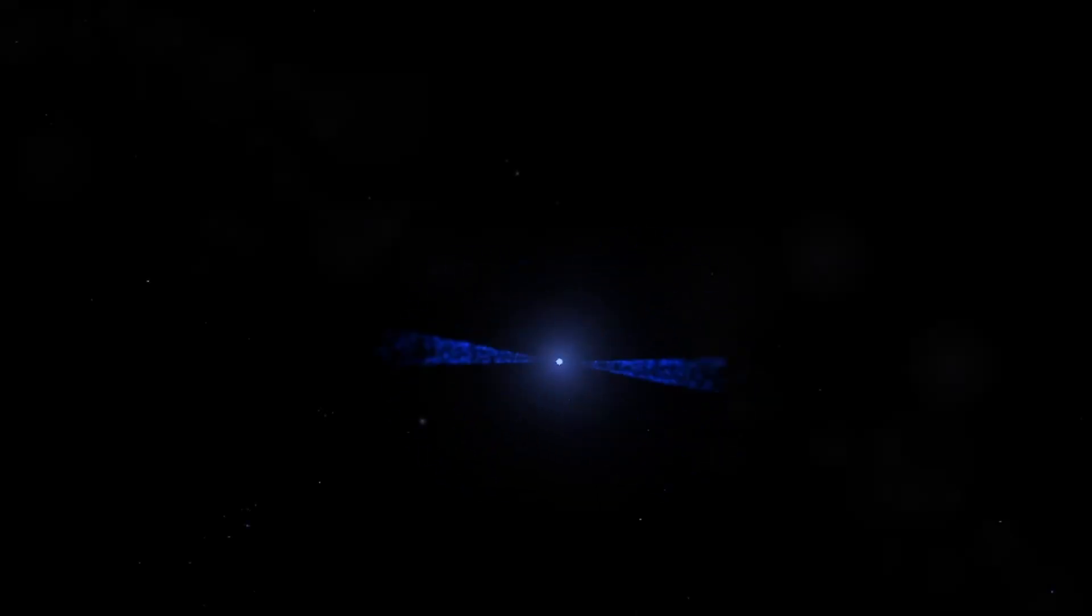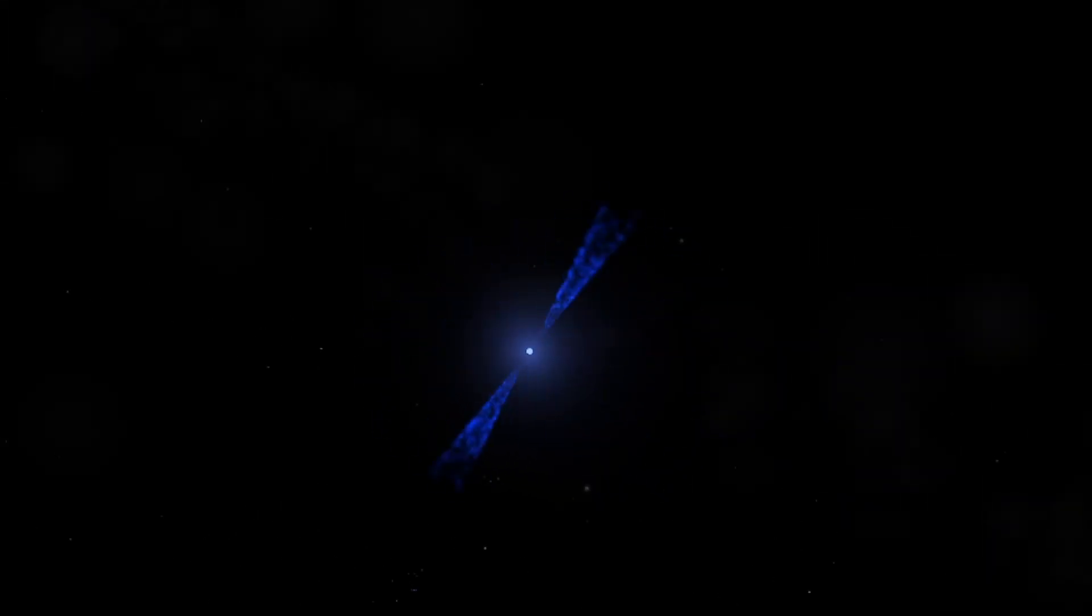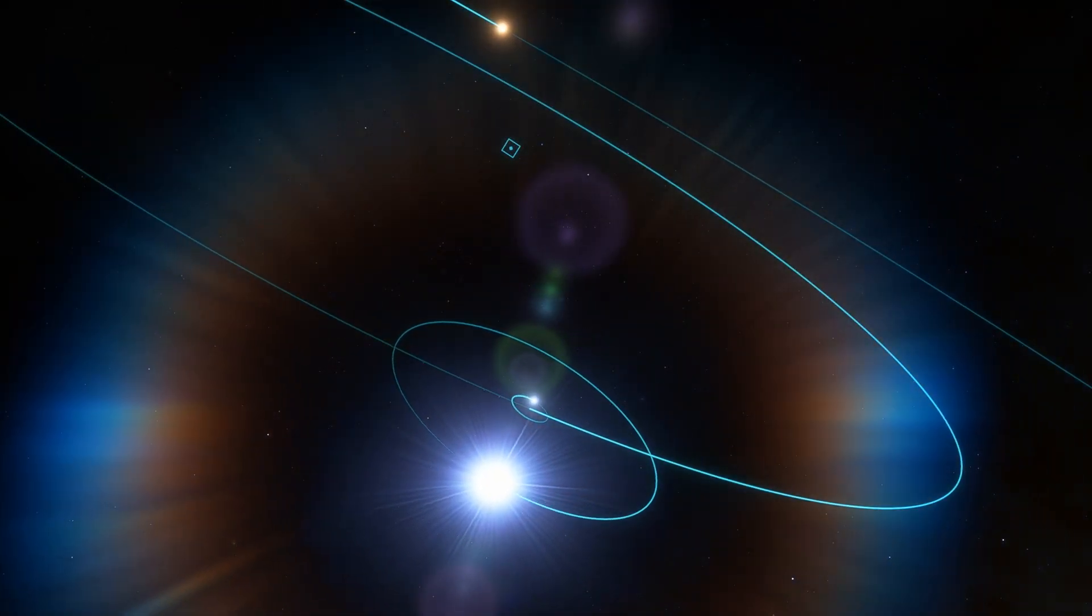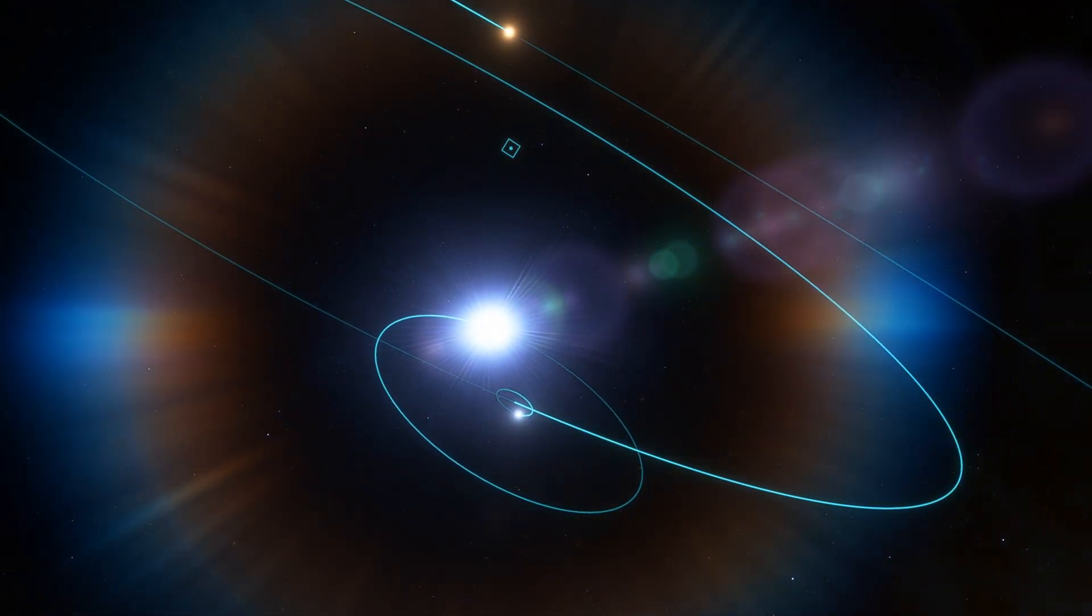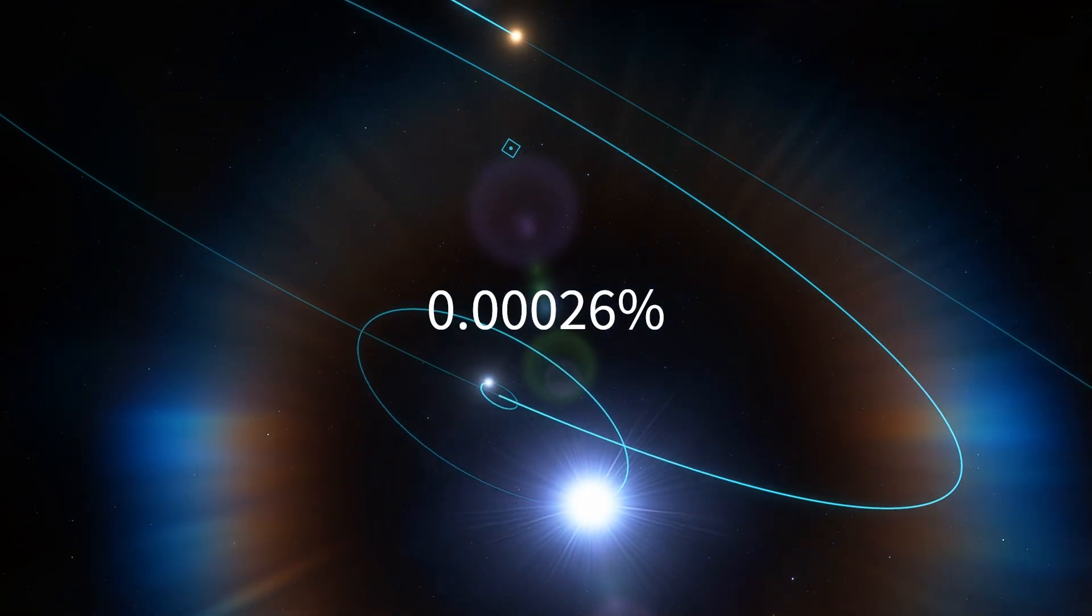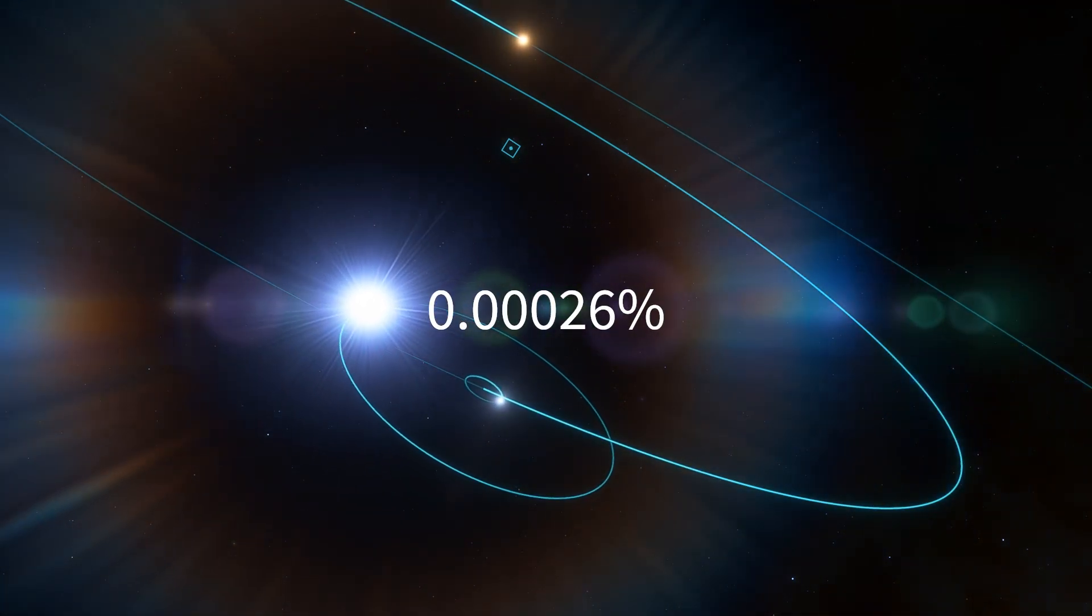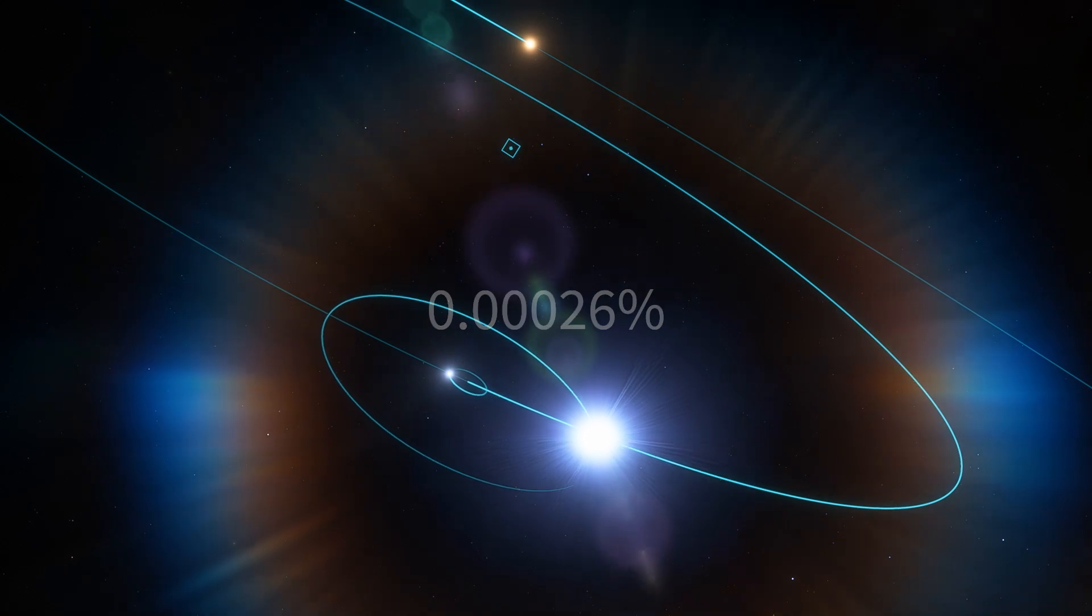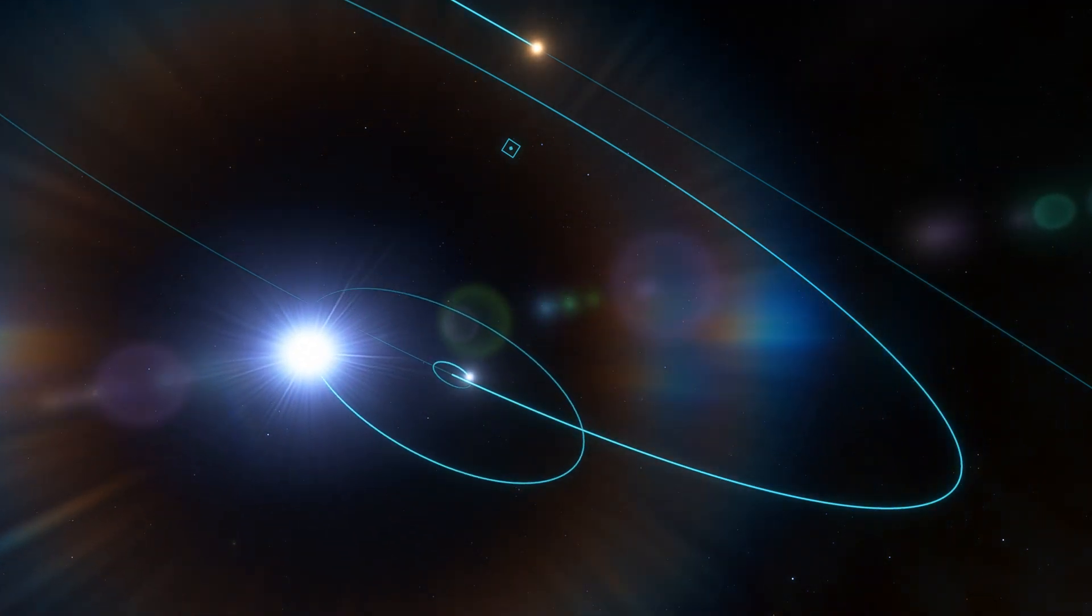A 2019 analysis of pulsar timing variations from PSR J0337+1715 over 6 years found zero violation of this principle, and any difference between the inertial and gravitational mass of the pulsar less than 0.00026%, which is pretty good, and a percentage a thousand times smaller than previous strong field tests.